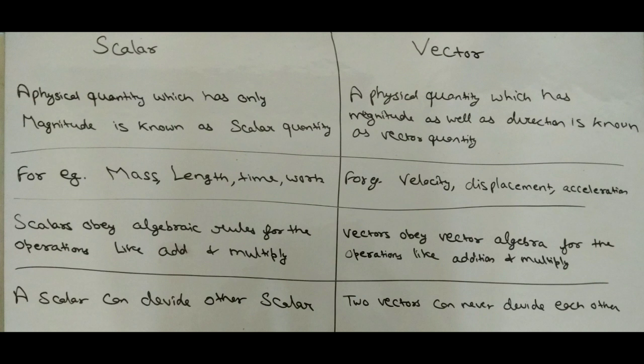Under scalar quantity, scalars obey algebraic rules for operations like addition and multiplication. But under vector quantity, vectors obey vector algebra for operations like addition and multiplication.